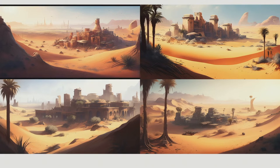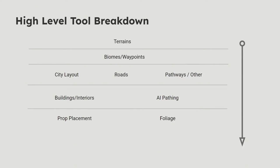I'm identifying repeatable elements, understanding where I want visual interest, and how I'm attracting a player to the scene. Starting from the very high level: terrains are king — it's what players walk around and explore. You want your terrains to pass all their info down. Once you have a beautiful terrain, the next step is biomes and waypoints — tagging within your terrains to say this is a desert biome, this is a winter biome, and tagging your assets to scatter them in those regions.